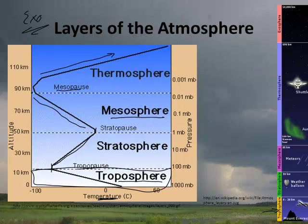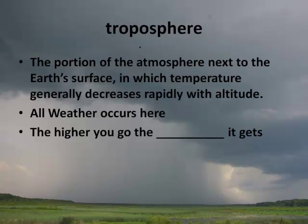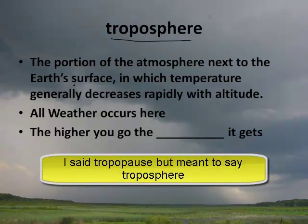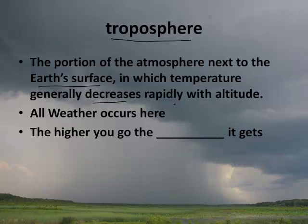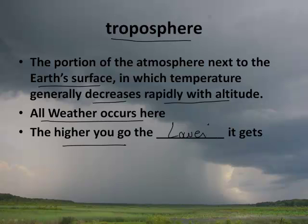The troposphere is the portion of the atmosphere next to the earth's surface in which the temperature generally decreases rapidly with altitude. All weather occurs here. The higher you go, the lower the temperature gets.